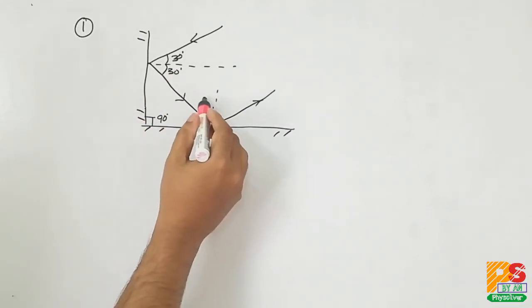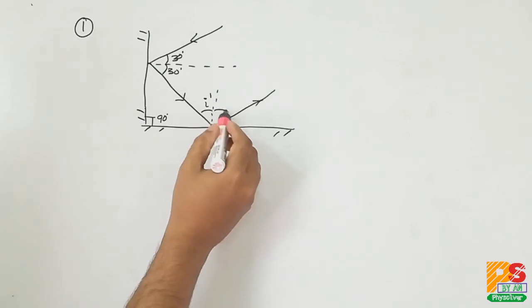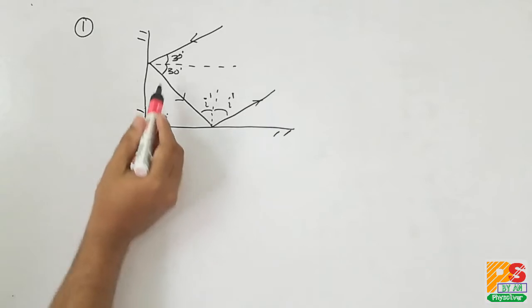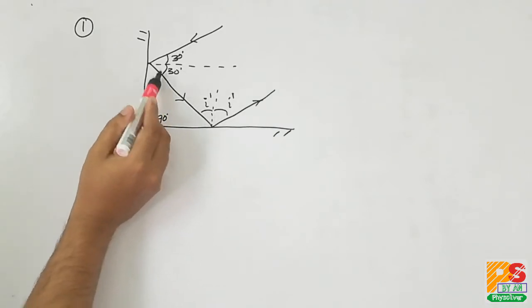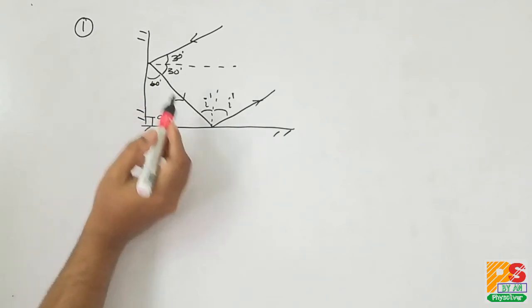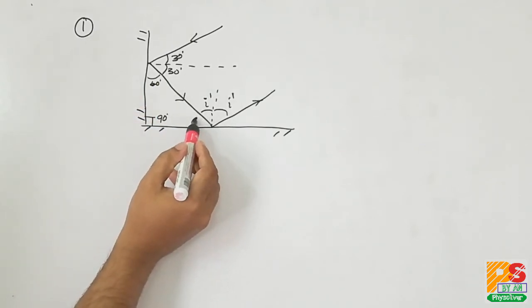Now we have to find the angle of incidence on the second mirror, that is I'. Since this is 30 degrees, this should be 60 degrees because the dotted line is normal to the mirror.